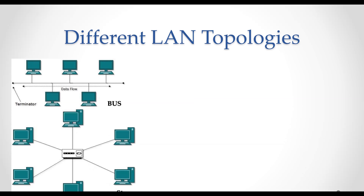In a star topology, all devices are connected directly to a central computer or server. Such networks are relatively easy to install and manage, but bottlenecks can occur because all data must pass through the central device. A star network topology uses a central hub or switch, and each computer or device has its own dedicated connection to the central hub or switch. Any type of network cable can be used, and this type of network is typically client-server.